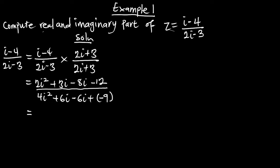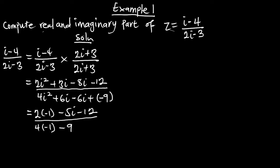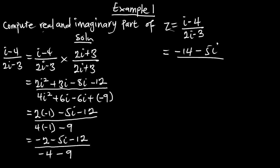We know that i squared is negative 1. So 2i squared is 2 times negative 1. That gives us negative 5i minus 12 in the numerator. For the denominator, 4i squared is negative 4, the 6i and negative 6i cancel, leaving negative 9. So we get negative 2 minus 5i minus 12 on negative 4 minus 9, which simplifies to negative 14 minus 5i on negative 13.